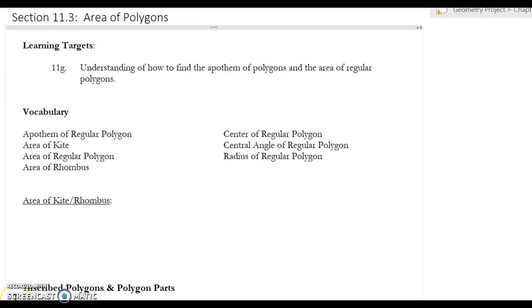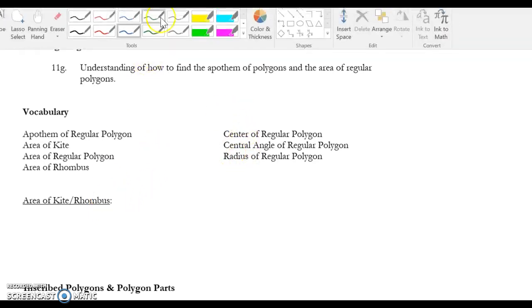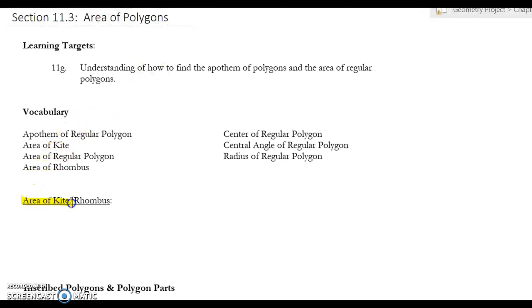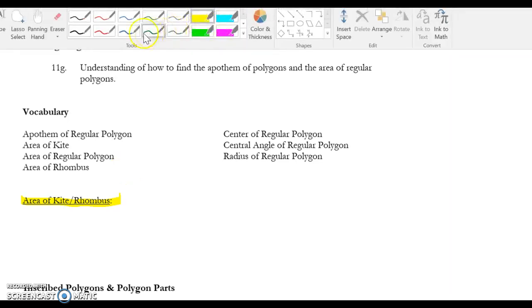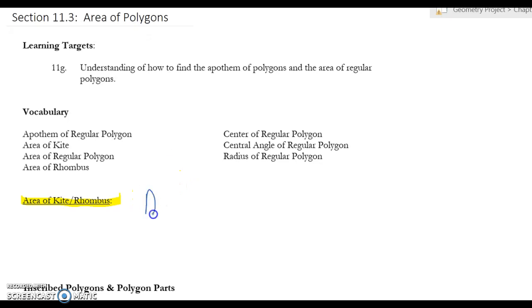Okay, so what we're doing today is we're working on section 11.3, area of polygons. There's a lot of different vocabulary, but let's go ahead and just start off with the area of a rhombus and a kite. So both of those, even though the shapes are a little different, the formula is the same.